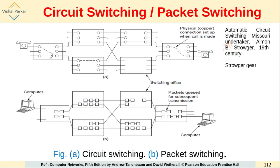In the schematic diagram shown here, part A is the circuit switching technique and part B is packet switching. The circuit switching technique is basically used in traditional telephone systems, as can be seen where a call is to be placed from one telephone to another.